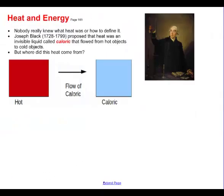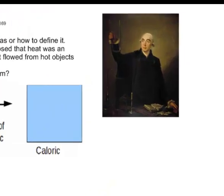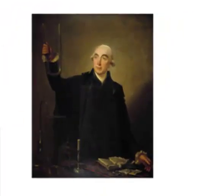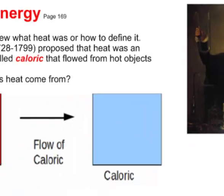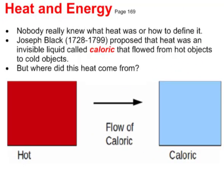There's also heat energy, which was tricky and eluded many scientists for a long time. Nobody really knew what heat was or how to define it. Joseph Black proposed that heat was some sort of invisible liquid called caloric that flowed from hot objects to cold objects. As you can see in the diagram, a hot object in red produces a flow of caloric fluid towards a cold object in blue. But the question remained: where does this heat come from?